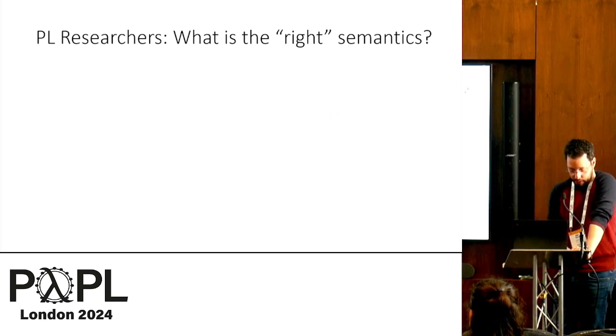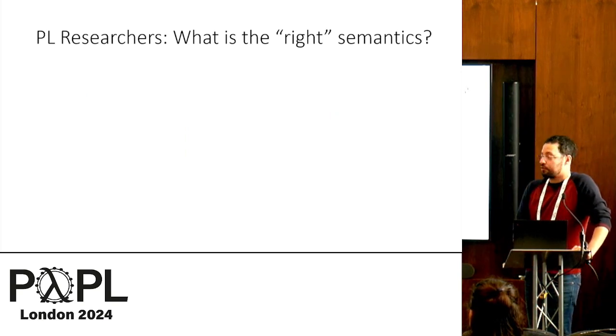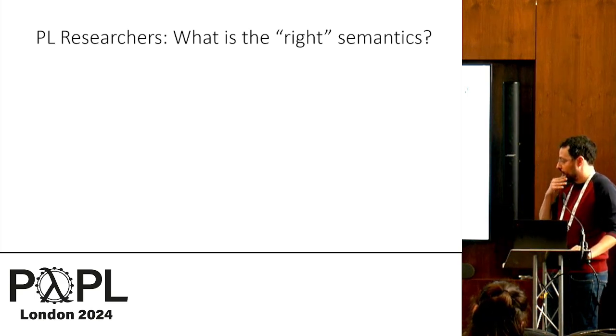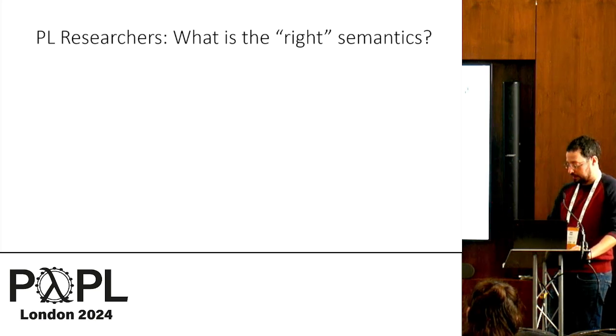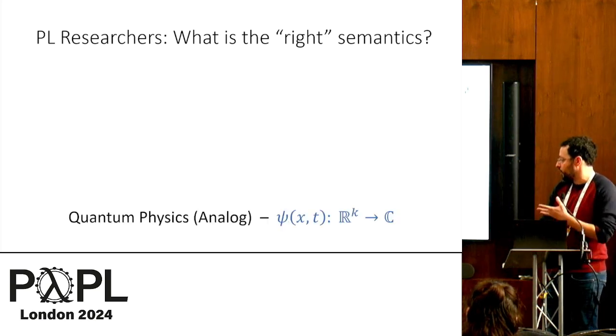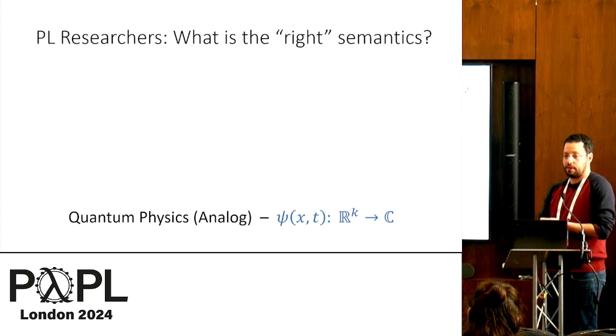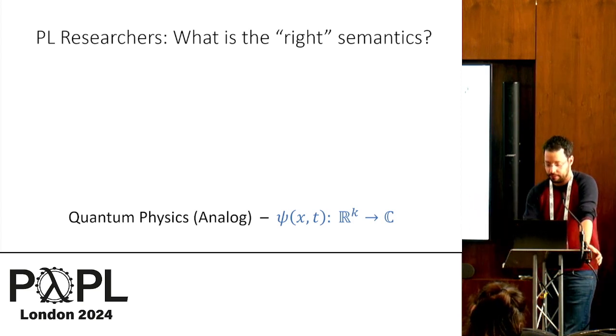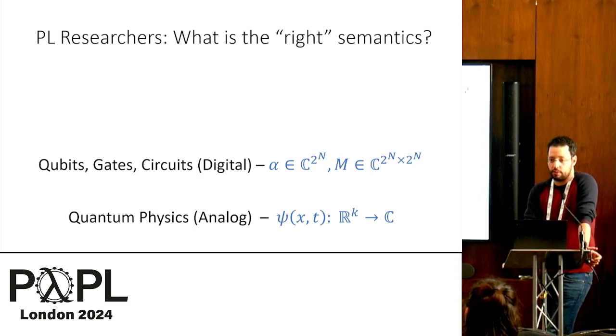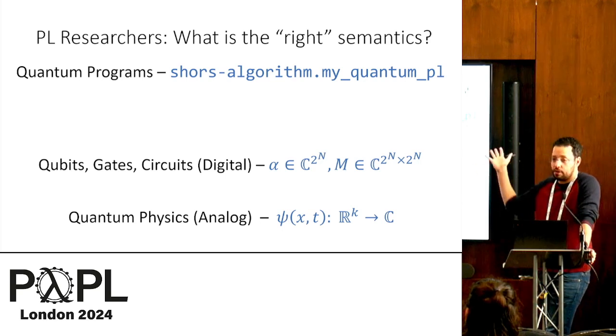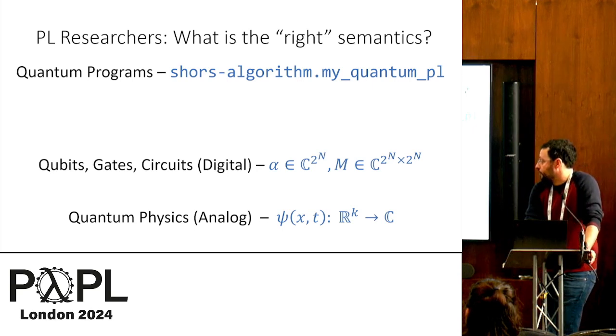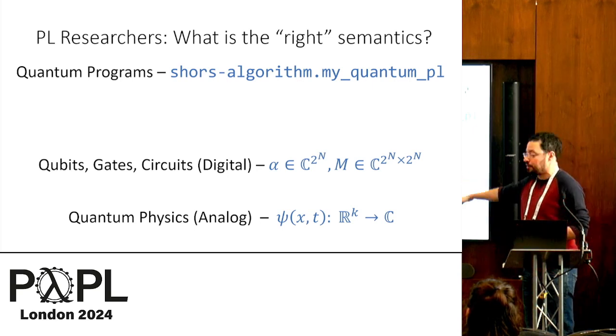All right, so now let's talk about the papers that we have in the session, and what is the PL research that we're doing here. And the very classical PL question is, what is the right semantics? So of course, on the bottom, we have the analog reality given by, described by the quantum physics. These are continuous functions of space and time. We talked about this digital abstraction of qubits and quantum gates. And maybe on the top, we have some actual programming language where you describe your quantum algorithm.